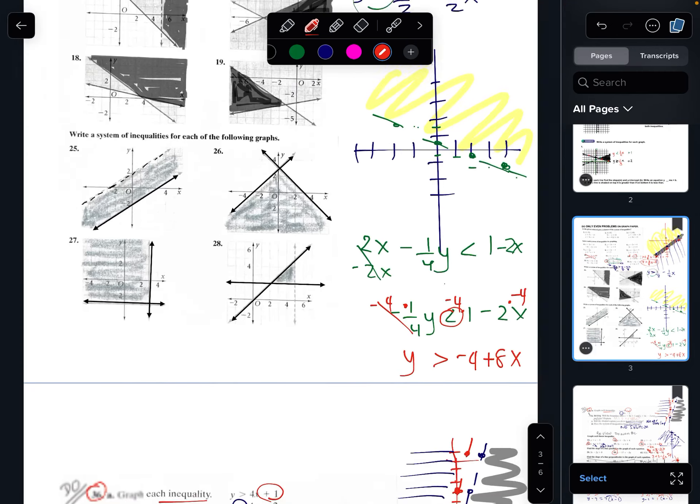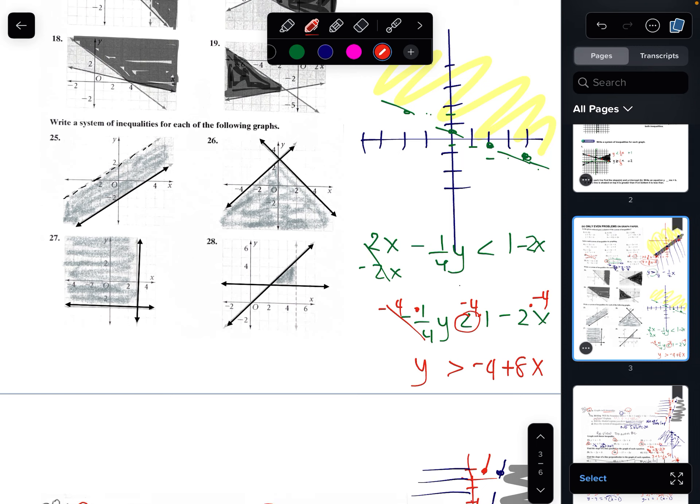Well, that's at negative 4. Go up 8. 4, 5, 6, 7, 8 over 1. Okay. We just make that a dashed line. All we need is 2 points greater than. Shaded on top. That's it, right there.